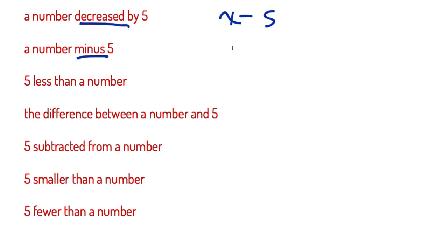A number minus 5, that's also going to be x minus 5. 5 less than a number - x would be our number, and then 5 less than is minus 5.